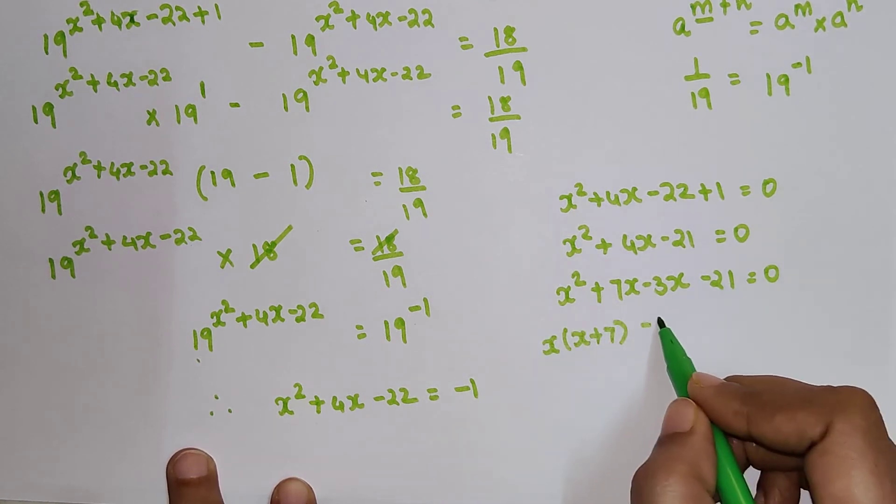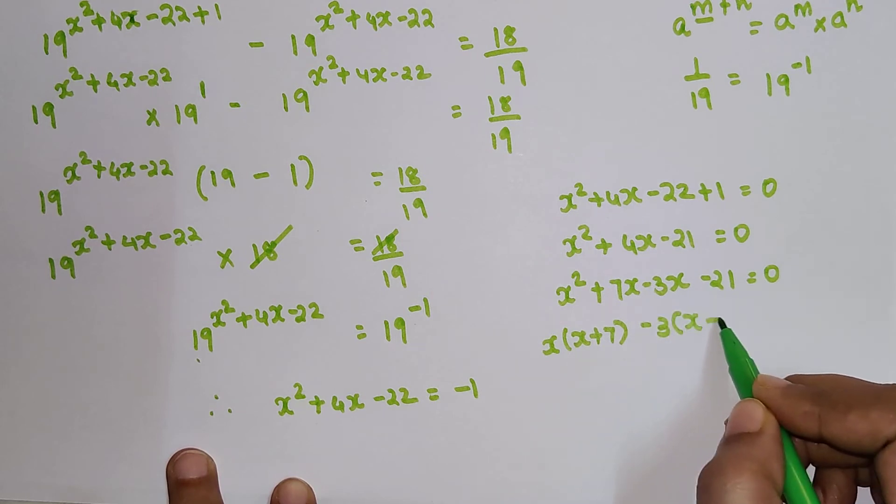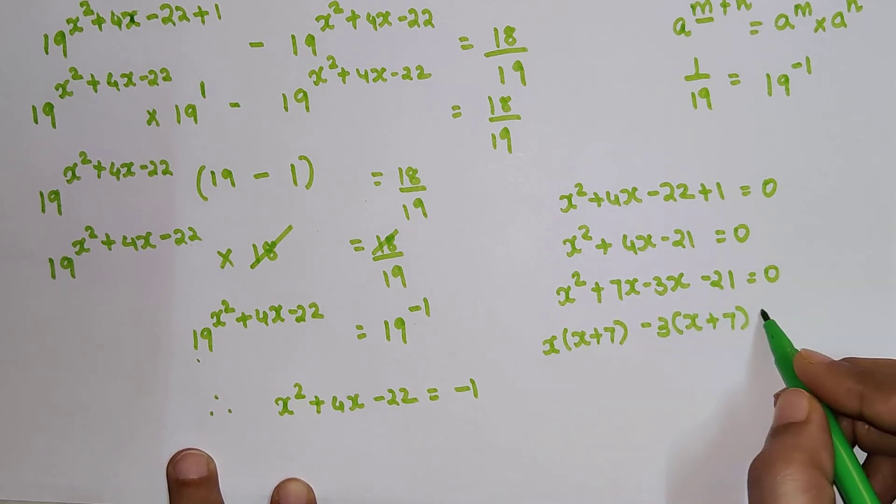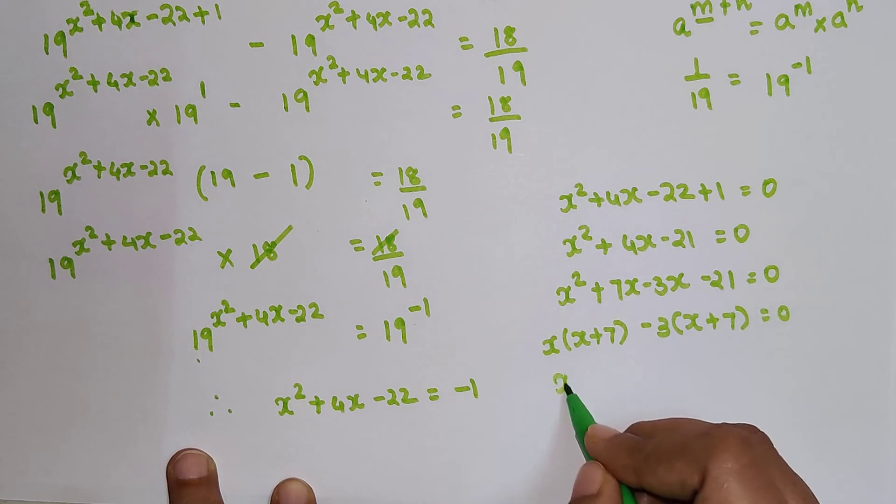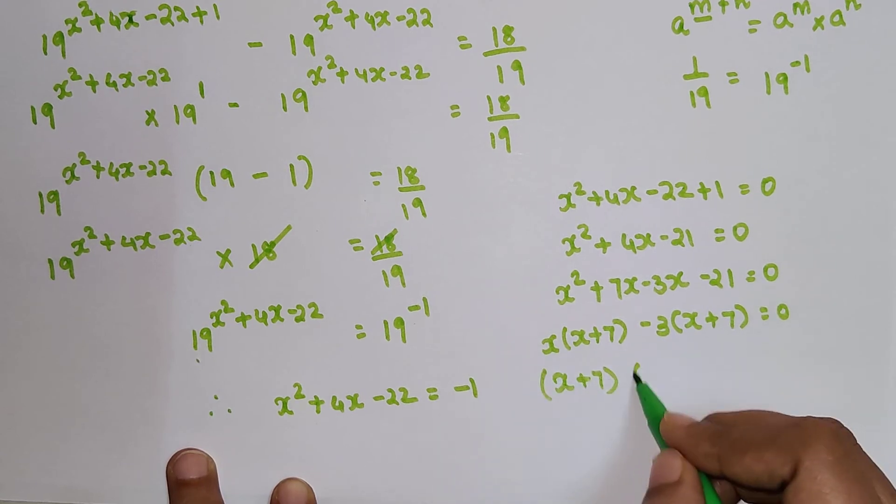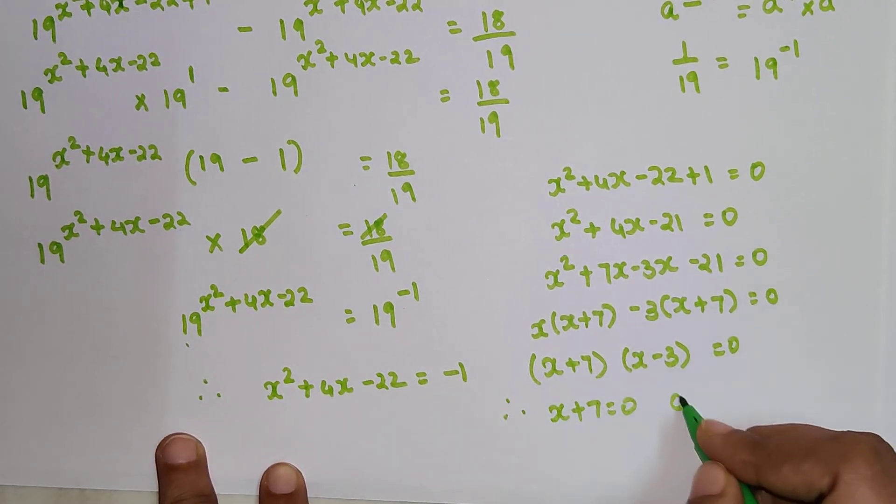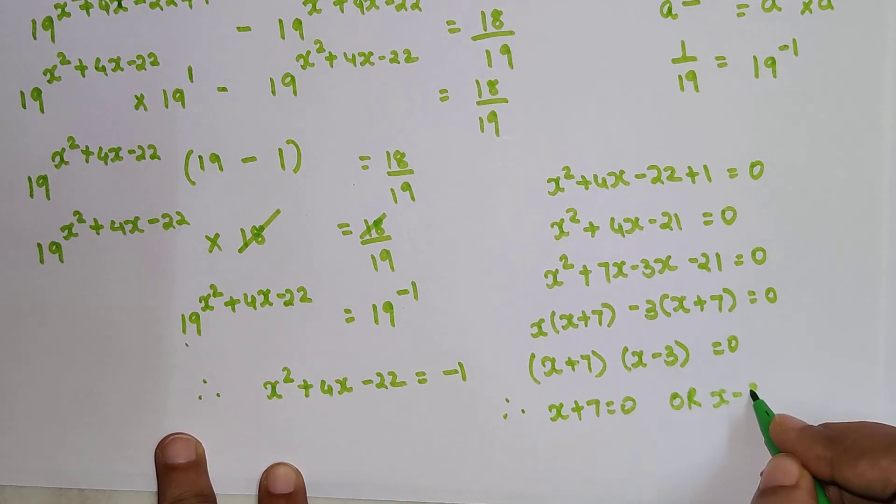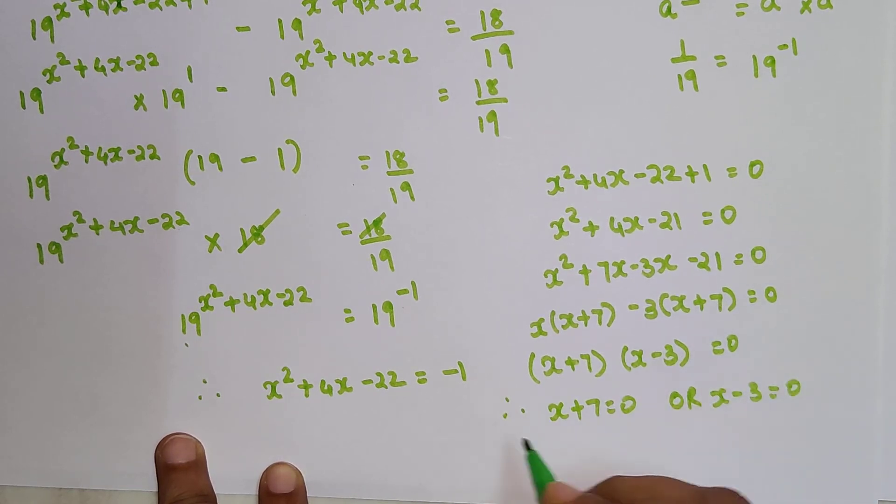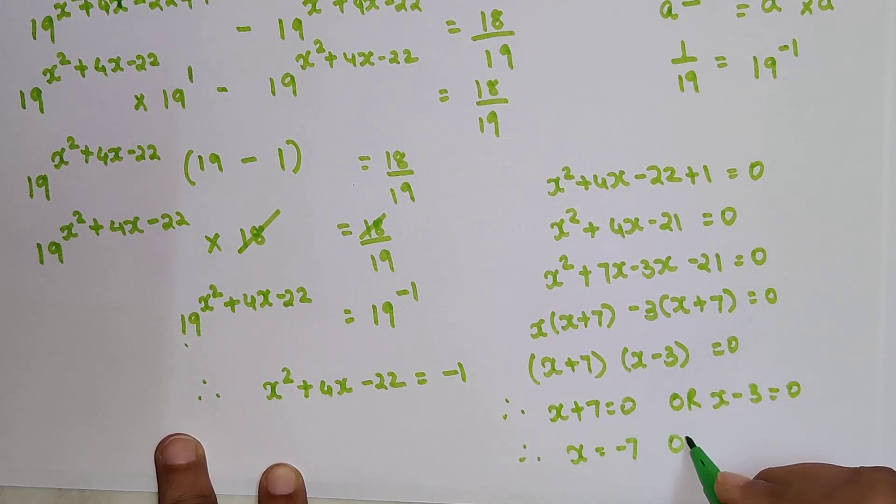We have (x+7) common, so (x+7)(x-3) = 0. So I can say x+7 = 0 or x-3 = 0. Therefore, x = -7 or x = 3.